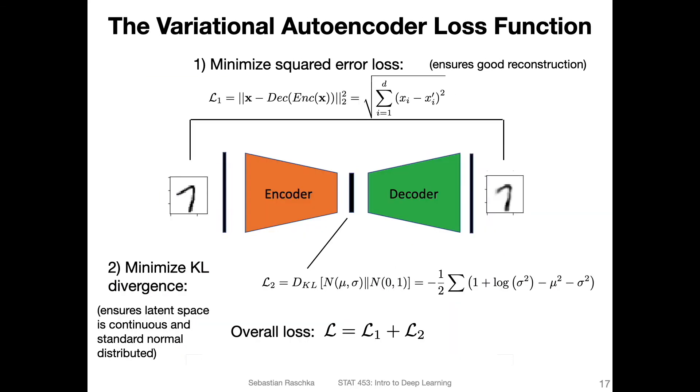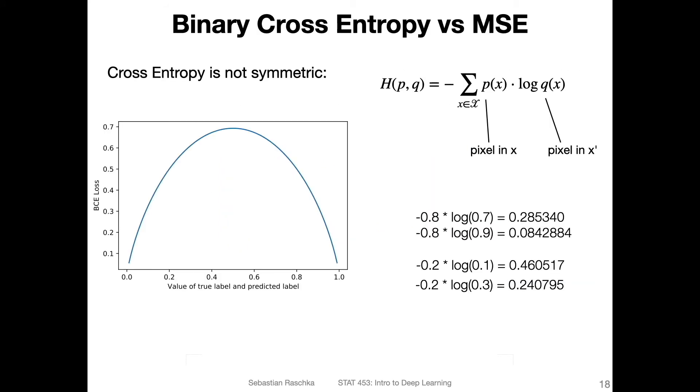In any case, what I also want to show you, let me go to the next part. I wanted to show you that the cross entropy is not symmetric. So this is also one issue why I think it's probably not a good idea to use a binary cross entropy as the reconstruction loss, because the loss is different depending on the pixel values.